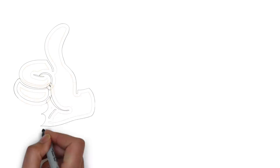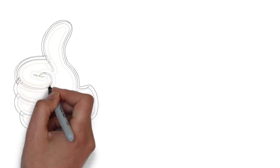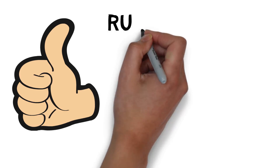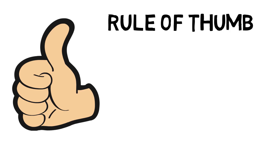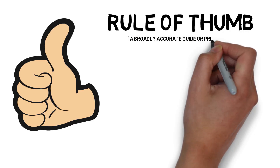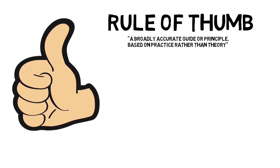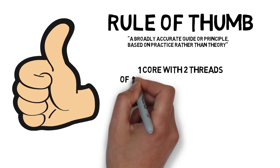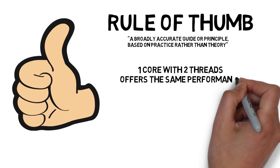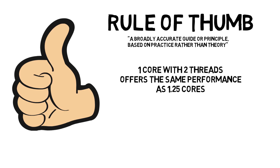So what does that mean for performance? I'll give you a rule of thumb — and it very much is a rule of thumb, depending on many factors including micro-architecture, generation, whether it's Intel or AMD, turbo boost frequencies, and cache size. But as a general rule: if you have one core with two threads, those two threads increase performance by about 25%. So it's like having one-and-a-quarter cores. That means four cores with eight threads is actually equivalent to having five physical cores — it's certainly not the same as eight physical cores.